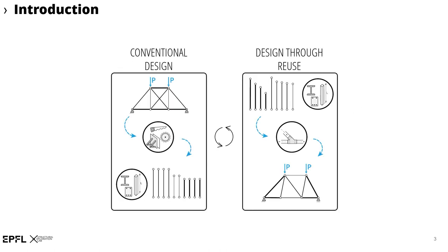In conventional structural design, the structural layout determines the required elements to be manufactured. Instead, the design of structures through reuse describes the inverse — structure topology and geometry must be designed to make best use of available stock elements. Depending on stock element characteristics, reused elements might also be combined with new elements to obtain structures with least environmental impacts.